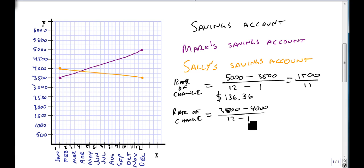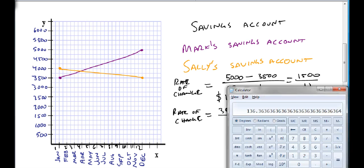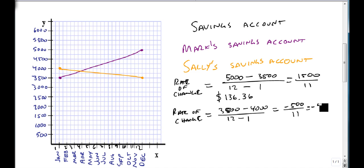We divide by the same 12 minus 1. So $3,500 minus $4,000 is minus $500. Divide that by 11. We grab our calculator back up. Notice with the computer calculator, you have to put the minus sign on after.